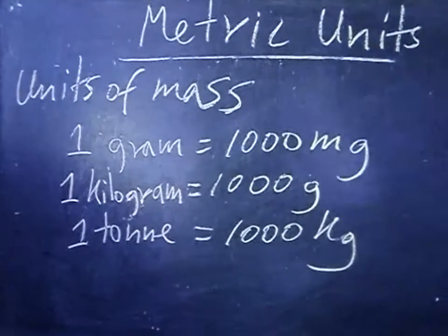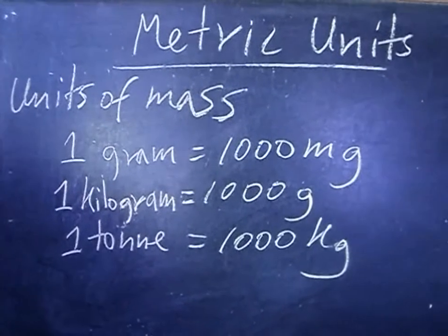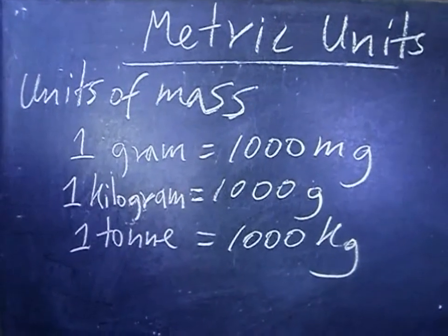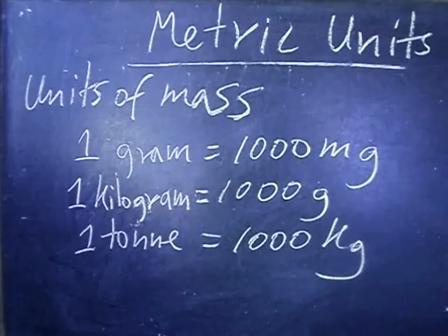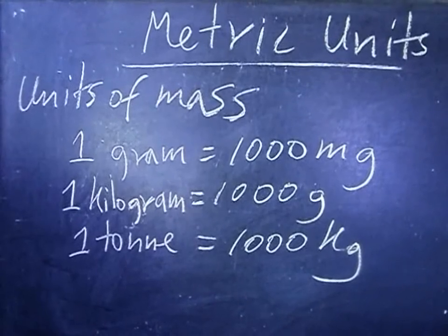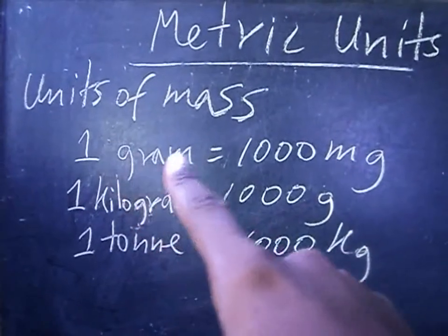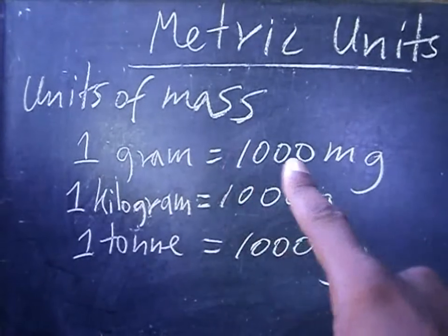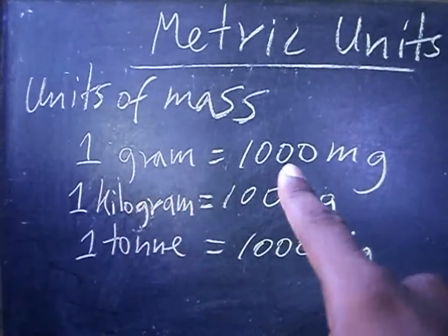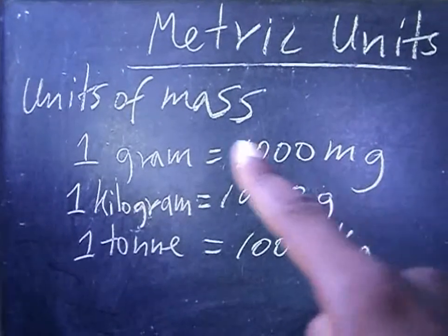Metric units — units of mass. The common units of mass include the gram. One gram is equal to 1000 milligrams, so you have 1000 milligrams in one gram.